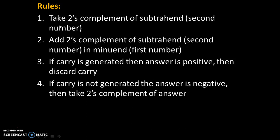Let's try to understand the rules of binary subtraction by 2's complement method. Rule 1: take 2's complement of the second number. Rule 2: add the 2's complement of the second number to the first number. Rule 3: if a carry is generated, then the answer is positive and discard the carry. Rule 4: if carry is not generated, then the answer is negative and take 2's complement of the answer.